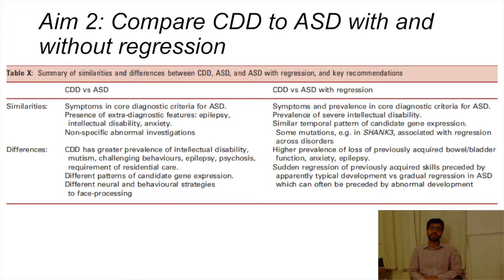A valuable neurogenetic study showed differences in functional MRI correlates of phase processing between CDD and ASD. Non-neocortical areas were engaged in CDD during phase processing. These areas were also found to have the highest level of CDD candidate gene expression. This gene expression pattern was significantly different to that seen in autism spectrum disorders. Overall, these differences may suggest differing neurobiology between CDD and ASD.